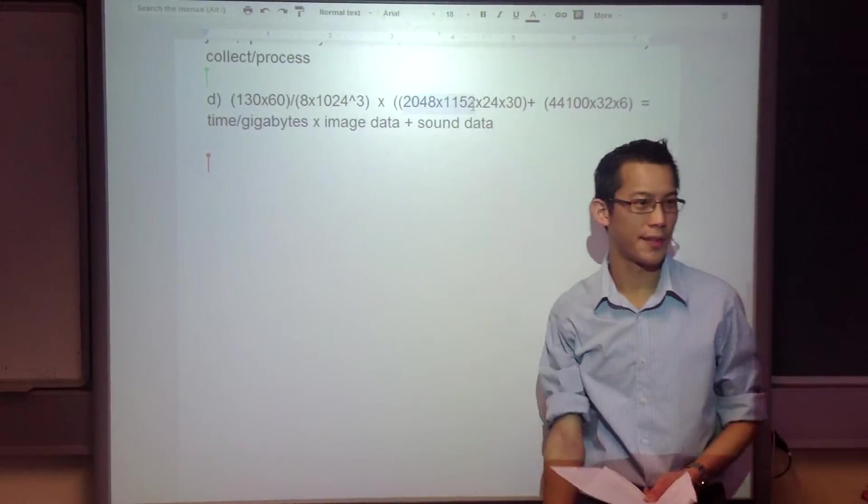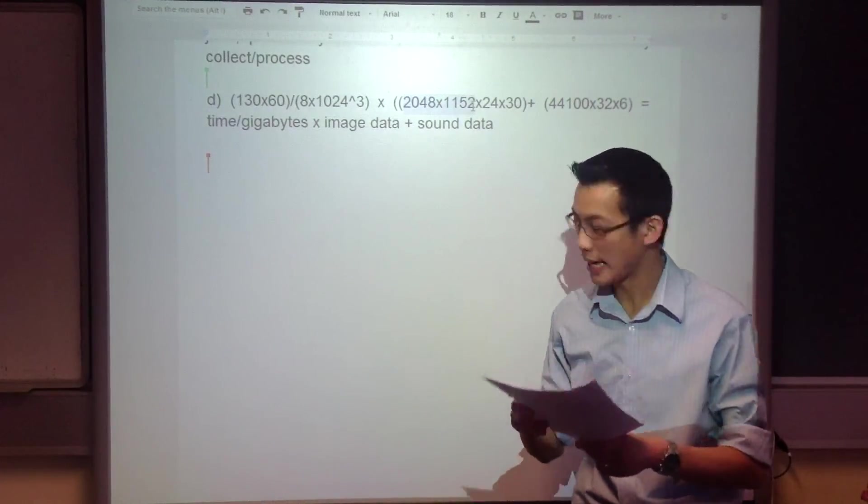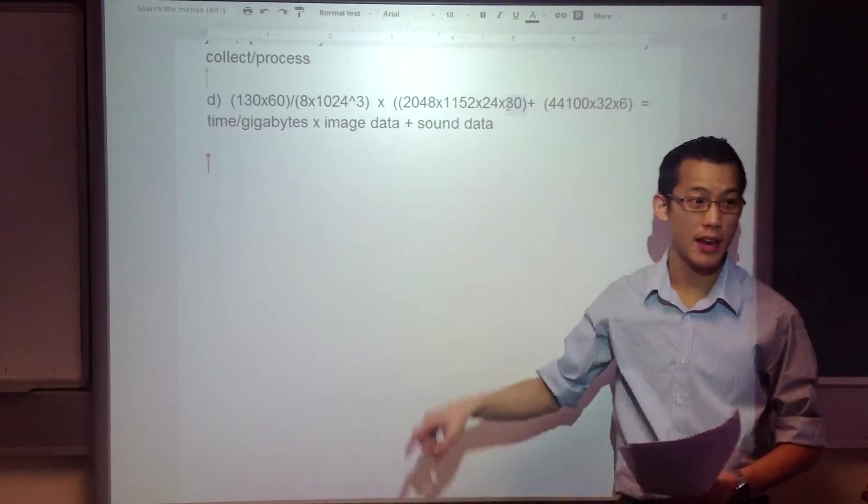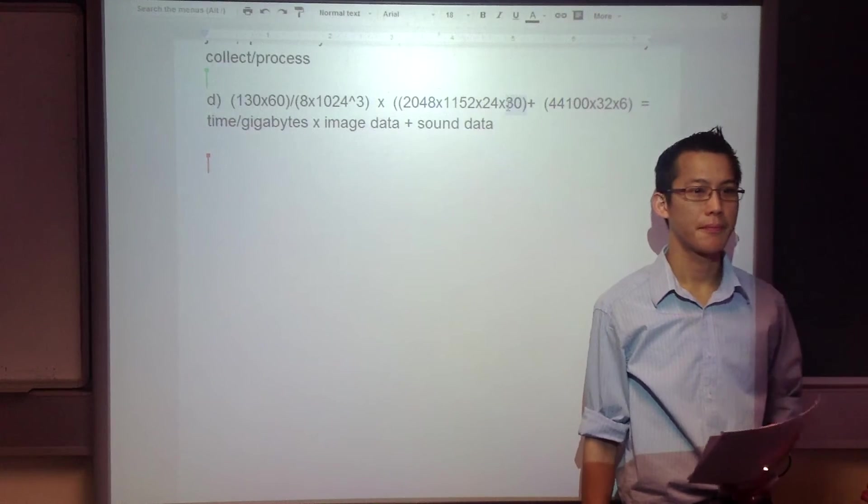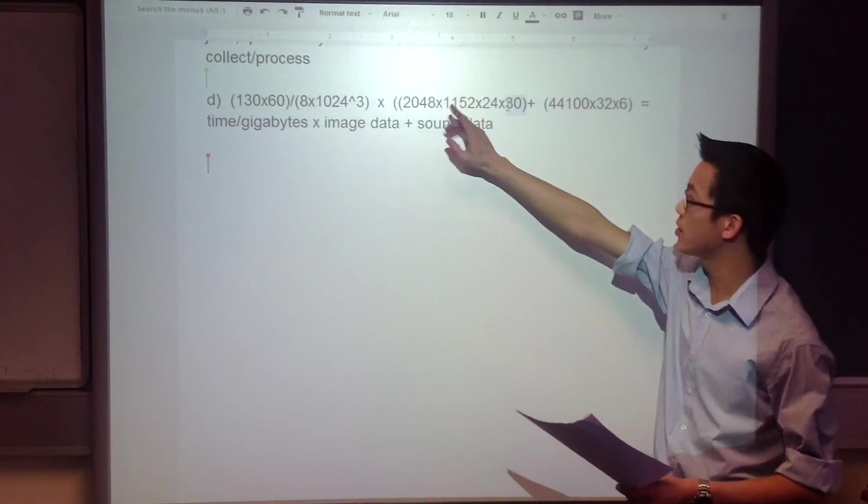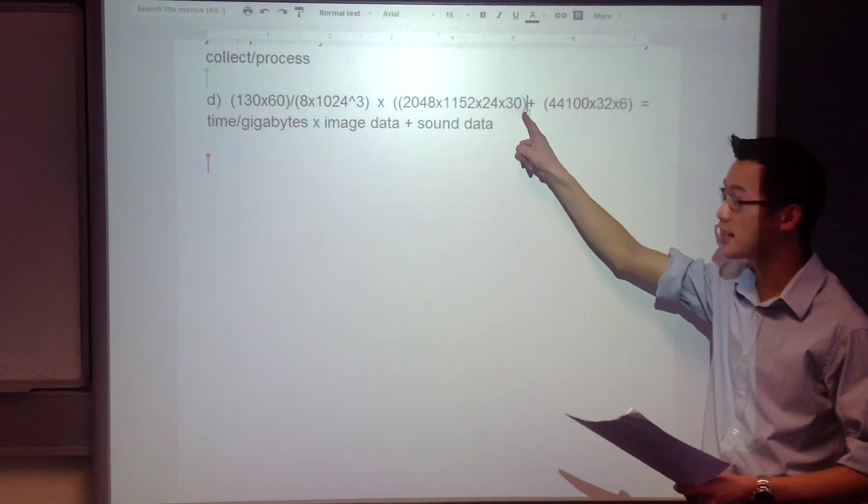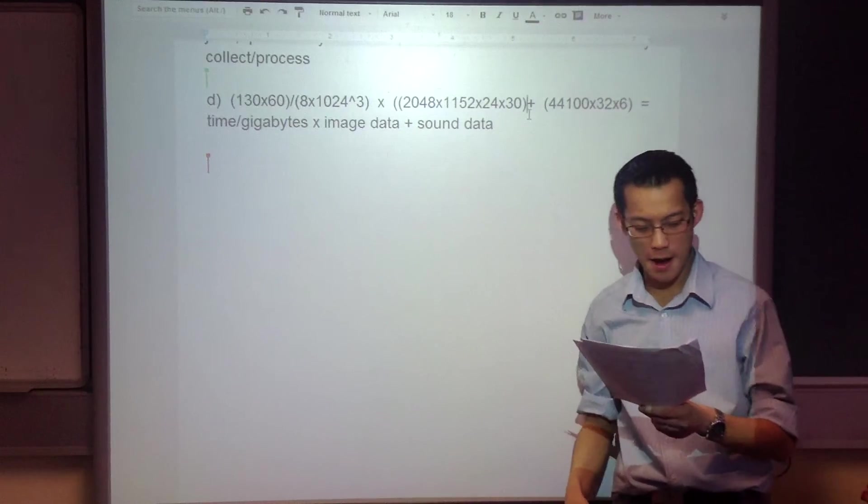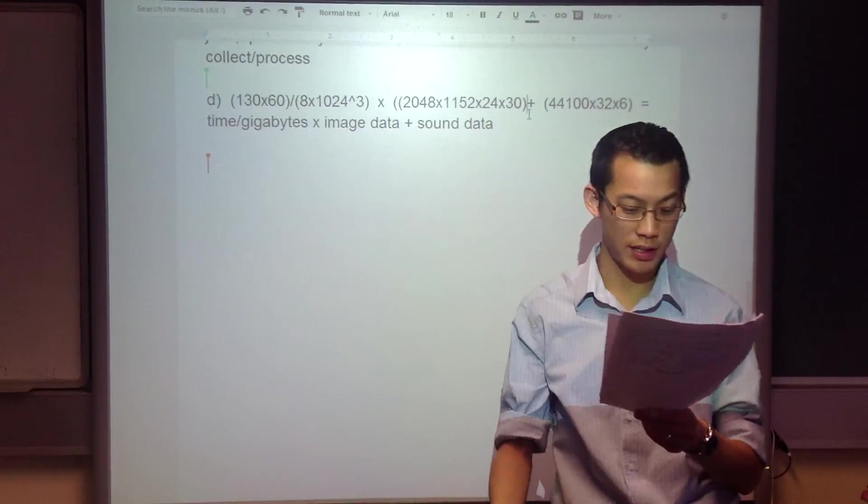This here, that's for free. That was the resolution. Everyone got that. 24 is the bit depth. How many colors, right? What's this 30? Some people missed that. And why is it connected to here? Here's how many pixels. Here's how many each pixel takes. And this is how many frames per second, right? Because it says at 30 frames per second in the first sentence.